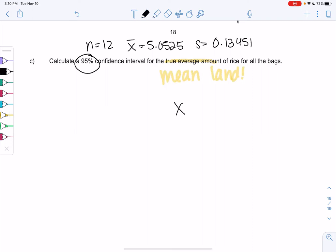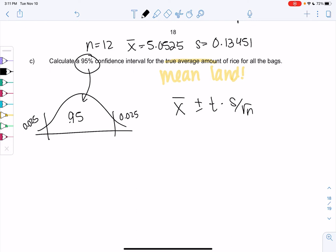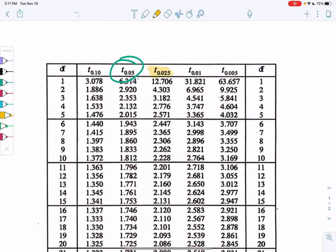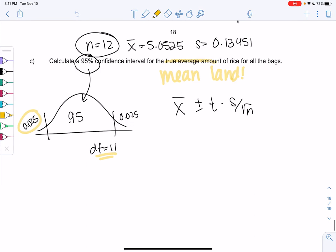We'll use the formula X̄ plus or minus T times S over root N. Let's put 95% in the middle for a 95% confidence interval. That means we have 5% left over, so 0.025 when I cut that in half. Each tail has to split it. Degrees of freedom will be 11, n minus 1. We'll go to the 0.025 column and the 11 row to find the T-score. 0.025 is the third one. We go down to 11, and I get 2.201.